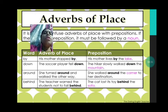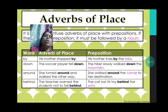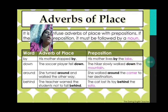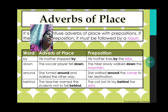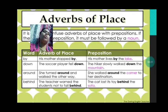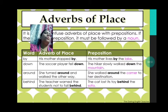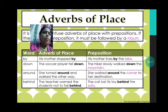Now: 'The soccer player fell down.' Here 'down' is adverb of place. 'The hiker slowly walked down the mountain.' Now after 'down', what do we see? We see 'mountain', and we know that 'mountain' is a common noun. So that 'down' will represent a preposition here.